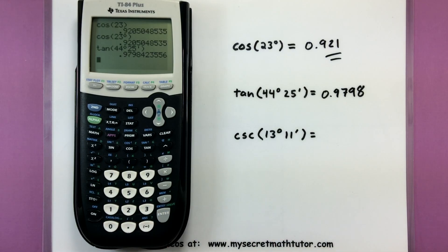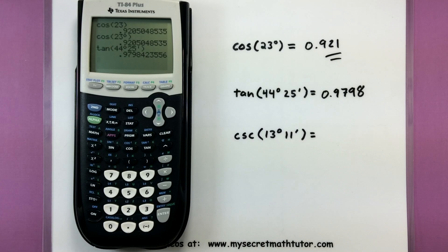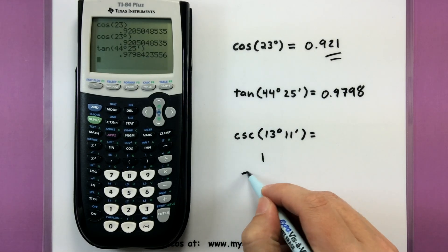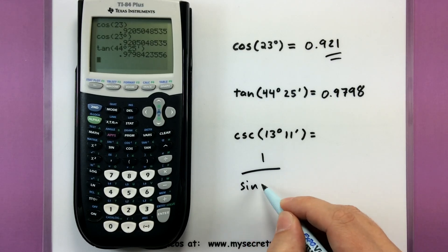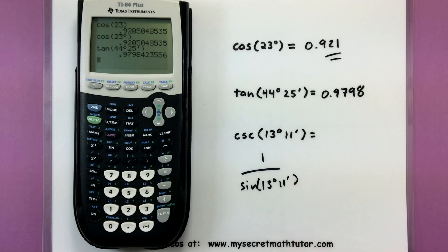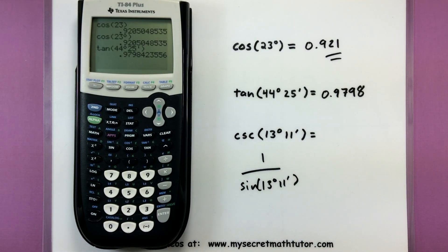So in the next one we're going to take care of cosecant and of course I don't have a cosecant button. But what I can do is recognize that cosecant is the reciprocal of sine. So instead I'm going to figure out what is 1 divided by sine of 13 degrees 11 minutes. And that'll give me the same value as my cosecant of 13 degrees 11 minutes.